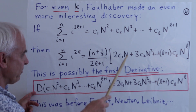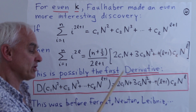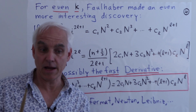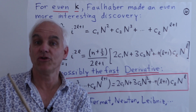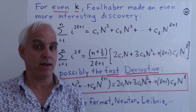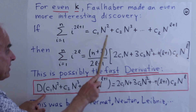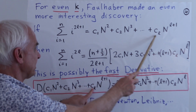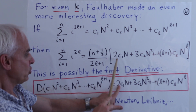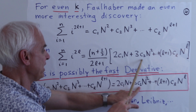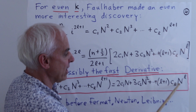This relation motivates the introduction of an operator — in fact this is, as far as I'm aware, the first known use or appearance of the derivative in a systematic way in mathematics. We define capital D of c₁N² + c₂N³ + … + c_l · N^{l+1} as 2c₁N + 3c₂N² + … + (l+1)c_l · N^l.